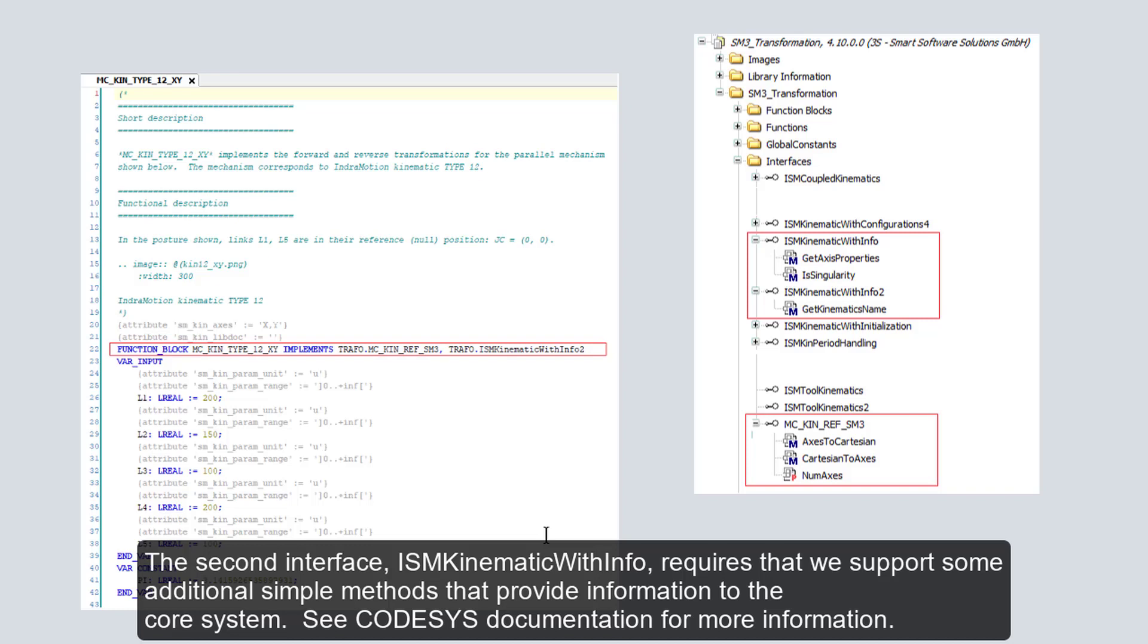The second interface, I_SM_KINEMATIC_WITH_INFO, requires that we support some additional simple methods that provide information to the core system. See the CODESYS documentation for more information.